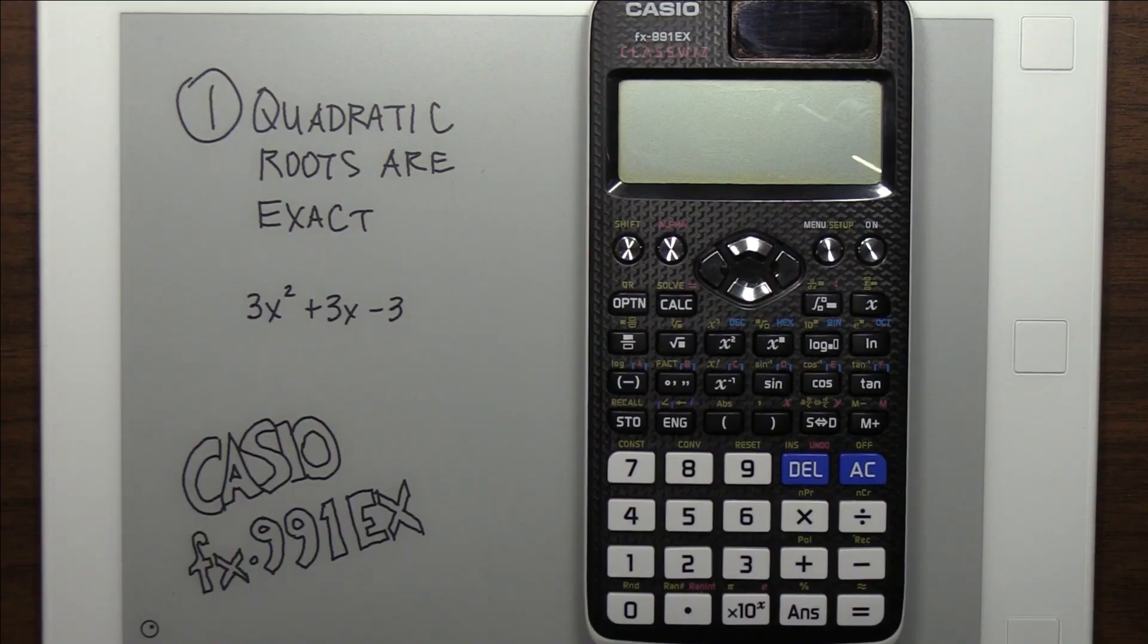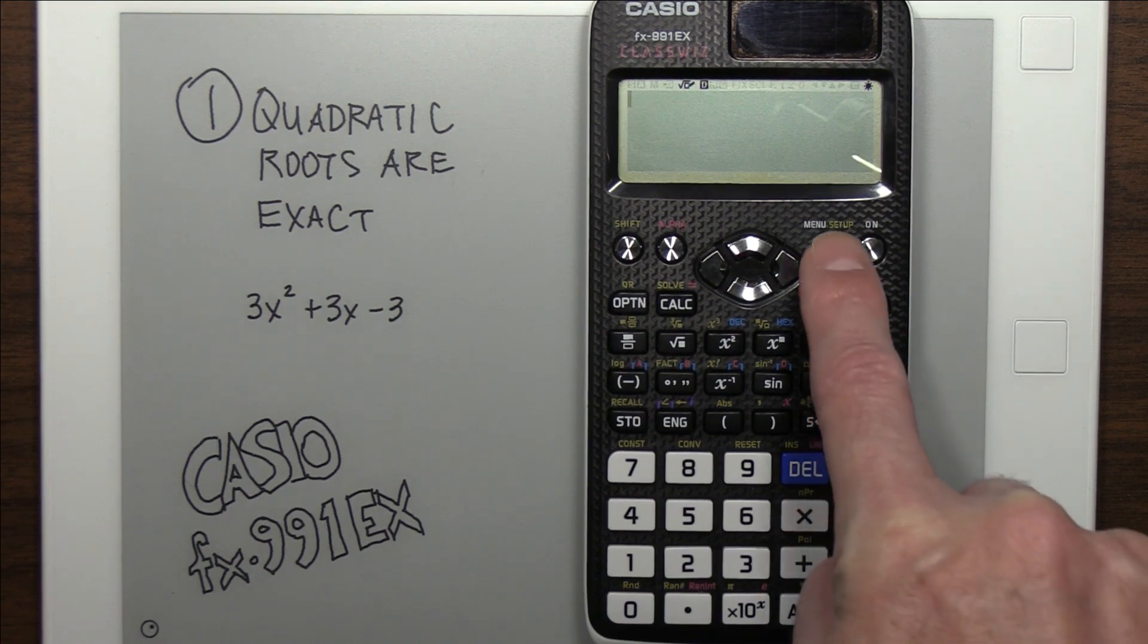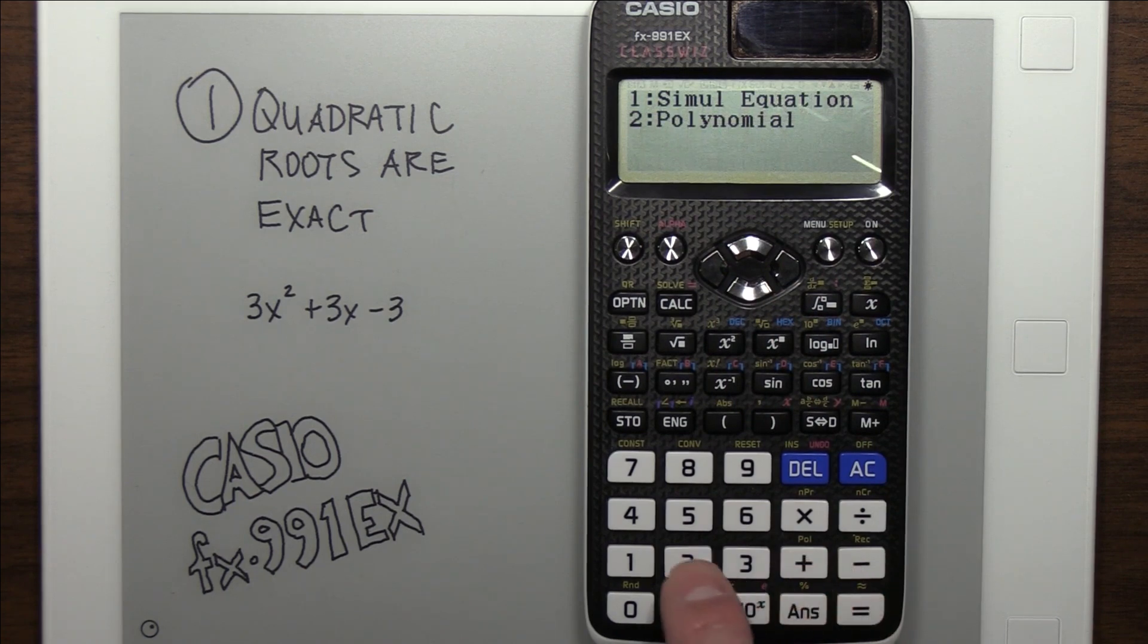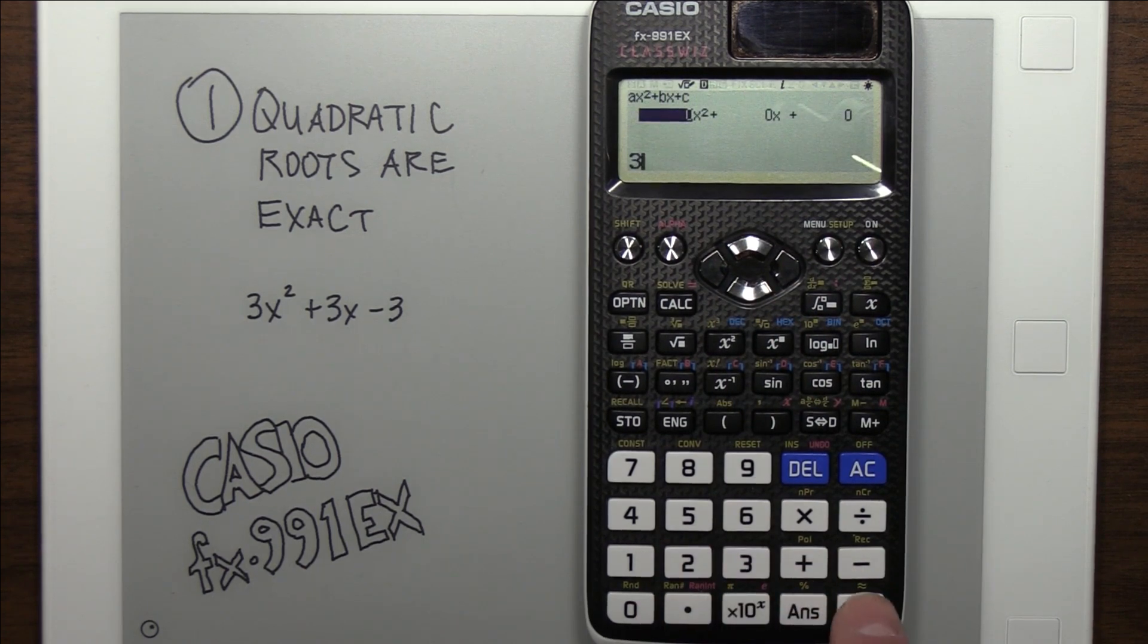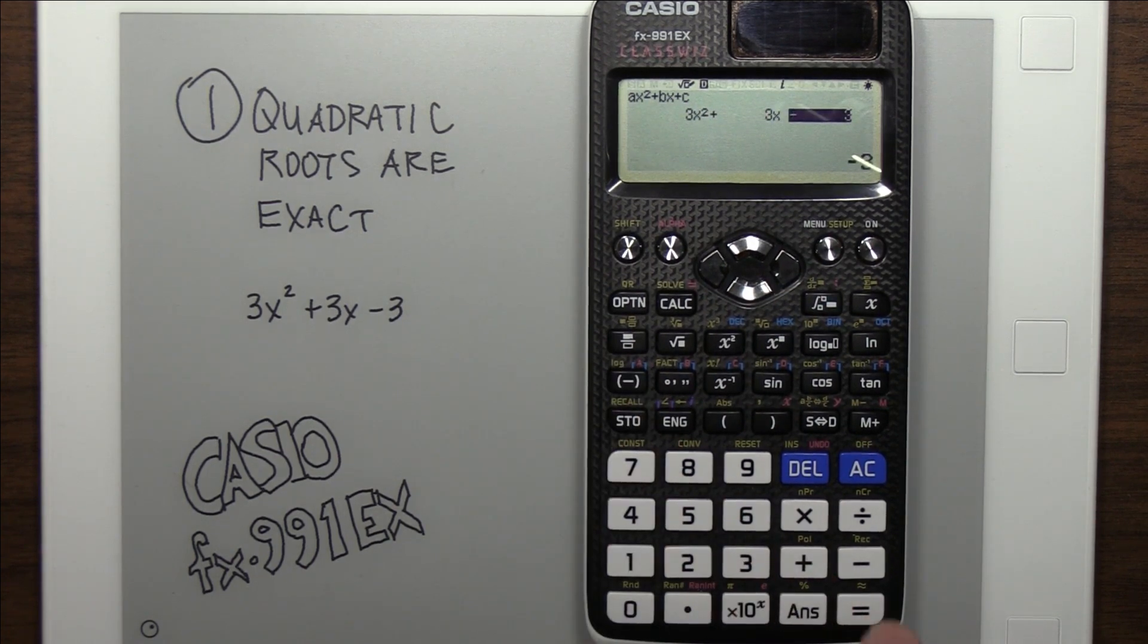Alright, let's turn the tables here. Let's look at some things, four things, that the Casio does well, that the TI does less well. Alright, so on the Casio, if you use the quadratic solver, it gives very nice answers. So we go down, down, over. We're doing a polynomial second degree. Let's put in our coefficients of 3, 3, and negative 3. And it gives a very nice negative 1 plus root 5 over 2.